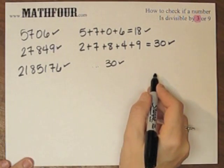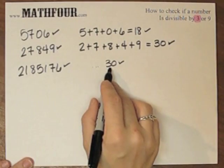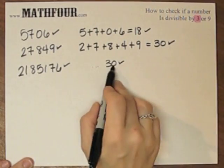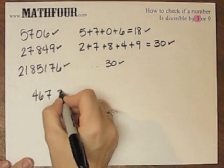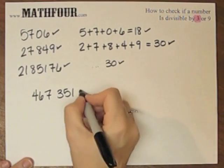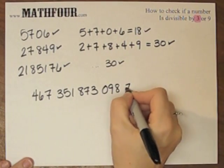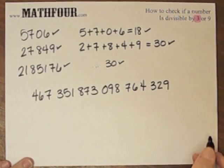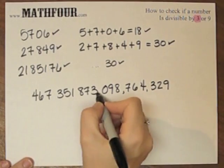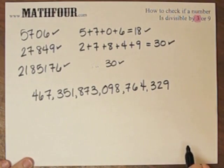So what happens if you have a number that is so long that when you add them up, you still have a number that's so long? Because 18 we know, and 30 we know, and 30 we know. So what if you have something like... So notice I broke them up into little smidgens. So we've got this humongous number. Is that divisible by 3?